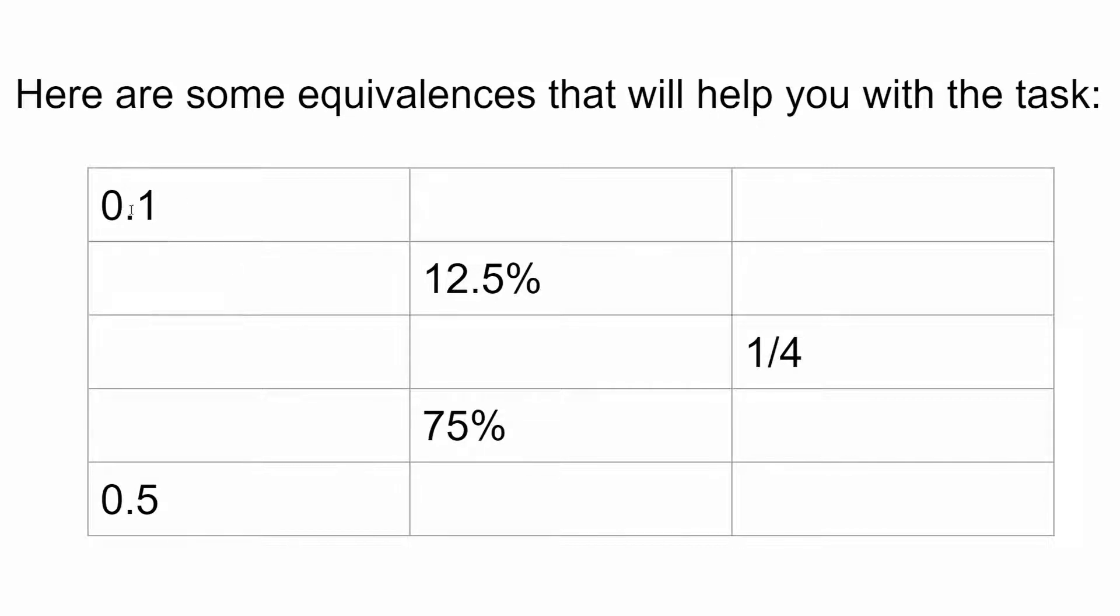So here I've got 0.1 and I can remember that to convert a decimal into a percentage, which is my middle column, I can multiply it by 100. So 0.1 would be 10%, and therefore it would be 10 over 100, or once I've simplified it, 1 tenth.